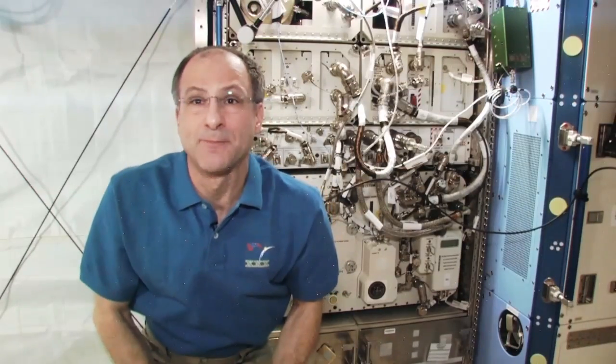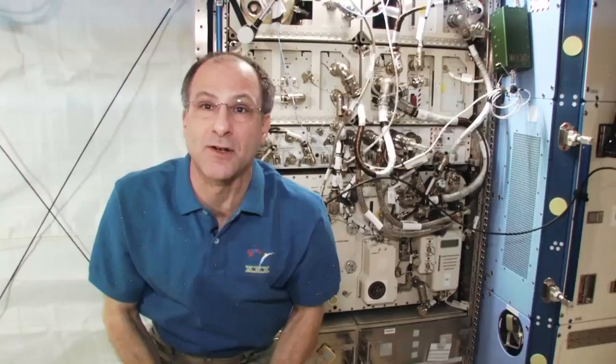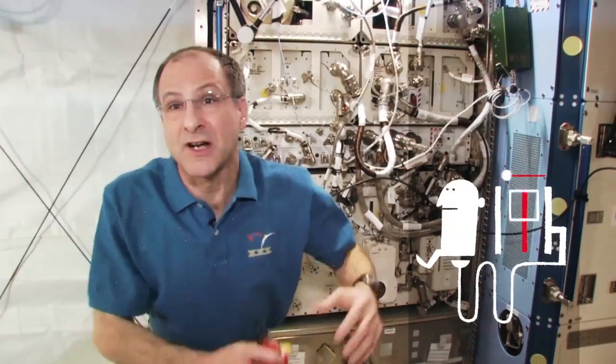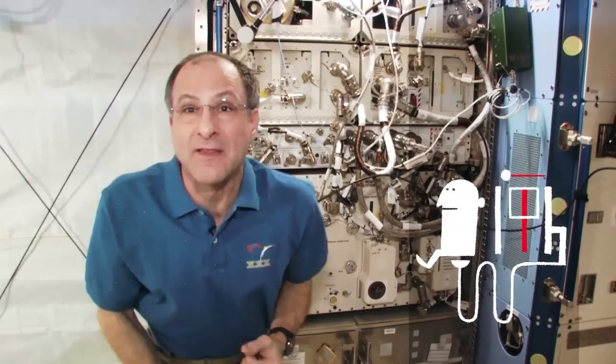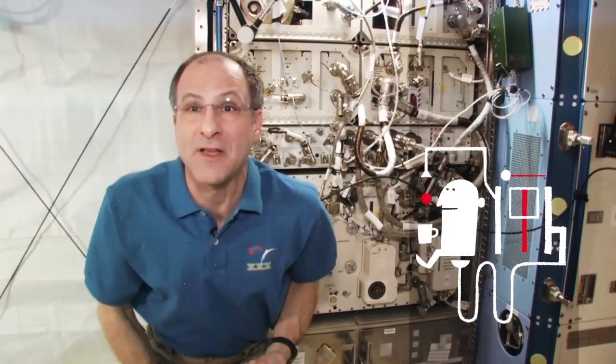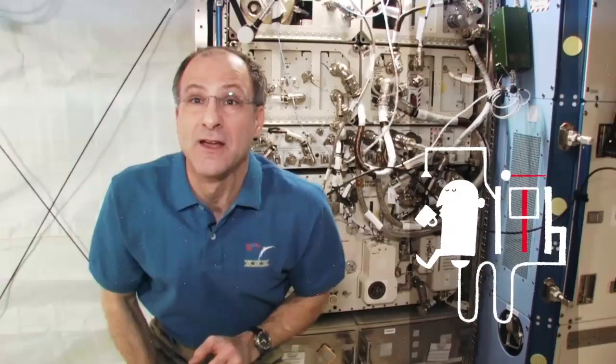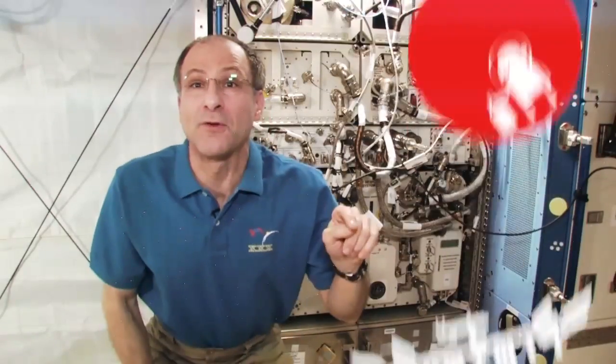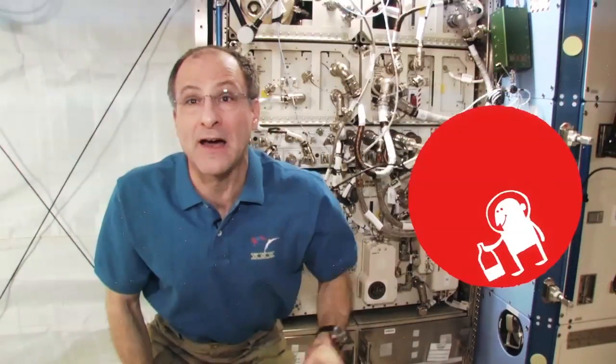We have a regenerative life support system, which is a fancy way of saying that we've got a toilet that you use, and then a machine that goes chugga-chugga-chugga, and then you go to the galley and make yourself a cup of coffee. And that's exactly what you are thinking it is. And this is the kind of engineering research that we're doing on Space Station. It's needed so that when we go to Mars, we won't run out of water.